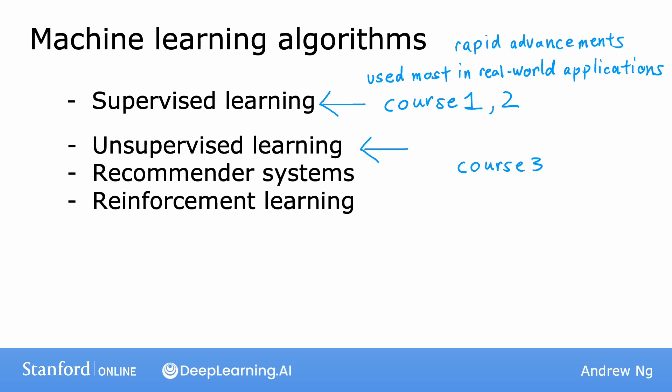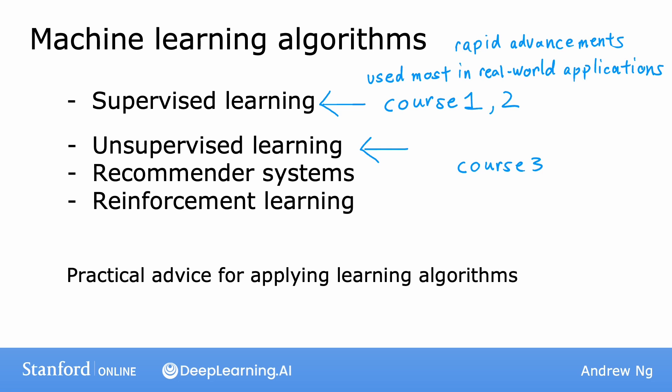By far the most used types of learning algorithms today are supervised learning, unsupervised learning, and recommender systems. The other thing we're going to spend a lot of time on in this specialization is practical advice for applying learning algorithms. Teaching about learning algorithms is like giving someone a set of tools, and equally important — or even more important — than making sure you have great tools is making sure you know how to apply them.